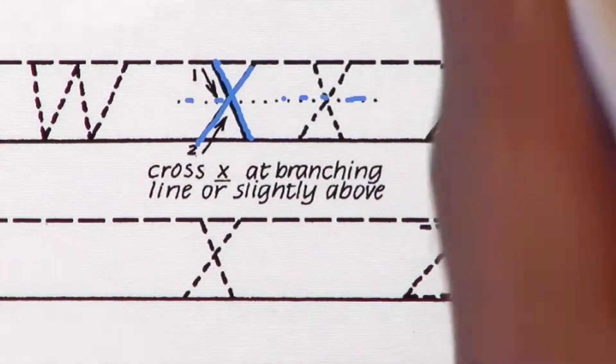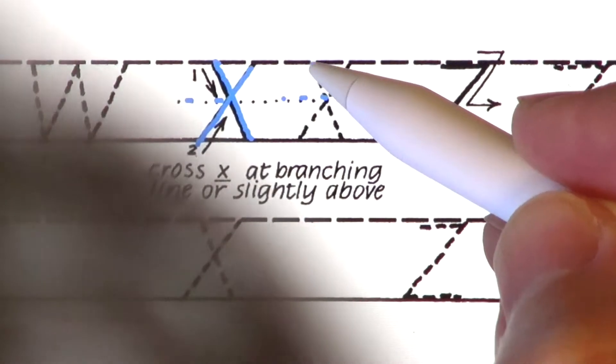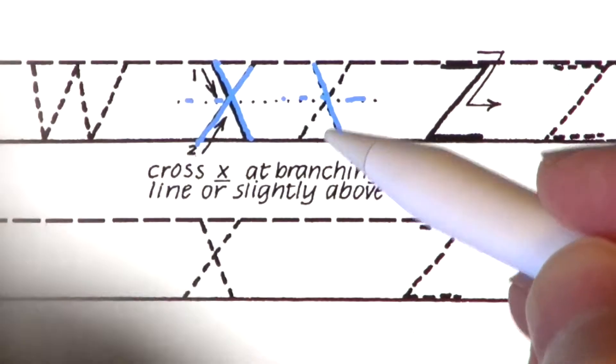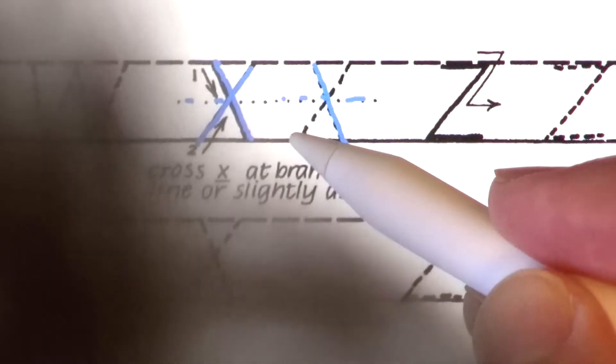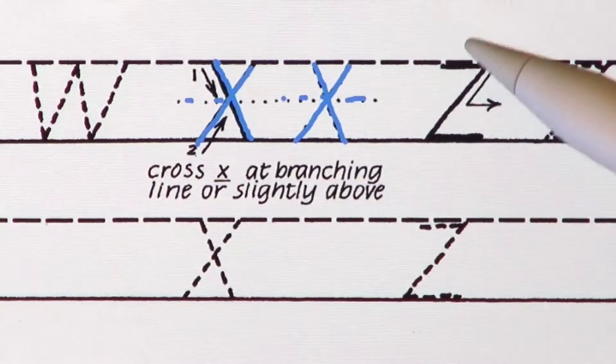Let's erase that stroke and practice again. Stroke 1, breathe out. Nice straight line. Stroke 2, move the pen over and up from the baseline to the waistline.